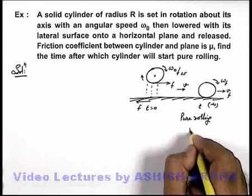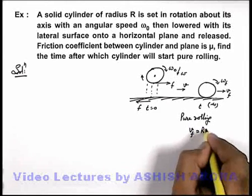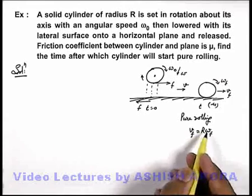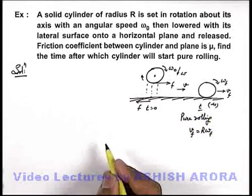And for the case of pure rolling we can write vf is equal to r omega f. Now in this situation we are required to find the time after which it'll start pure rolling.